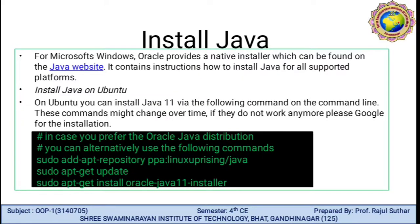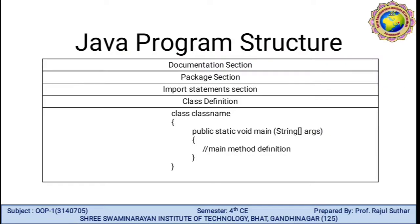For Microsoft Windows, Oracle provides a native installer. If the command line returns that the program could not be found, you have to install Java. If you prefer the Oracle Java descriptor, you can alternatively use the provided command. For Ubuntu, you can install Java using the installation path commands. This covers installation for both Windows and Ubuntu.